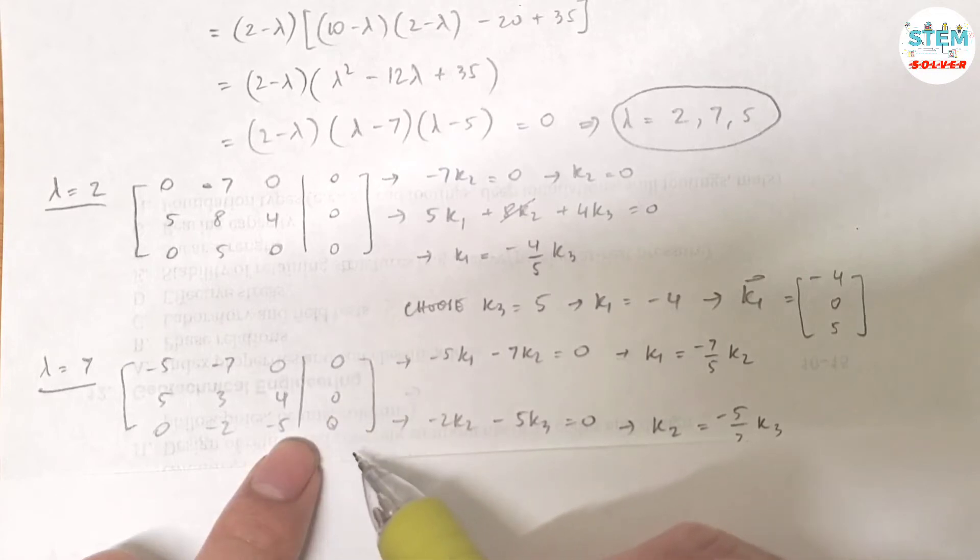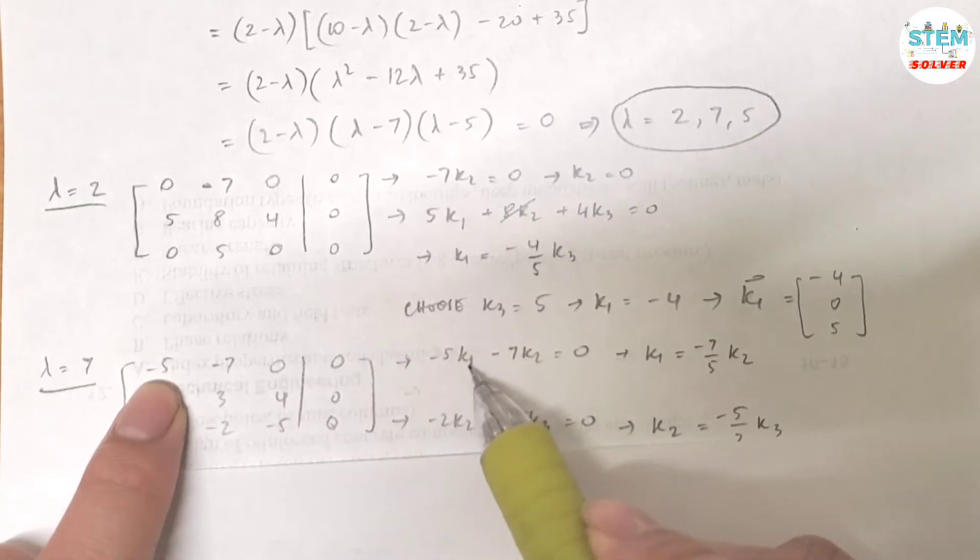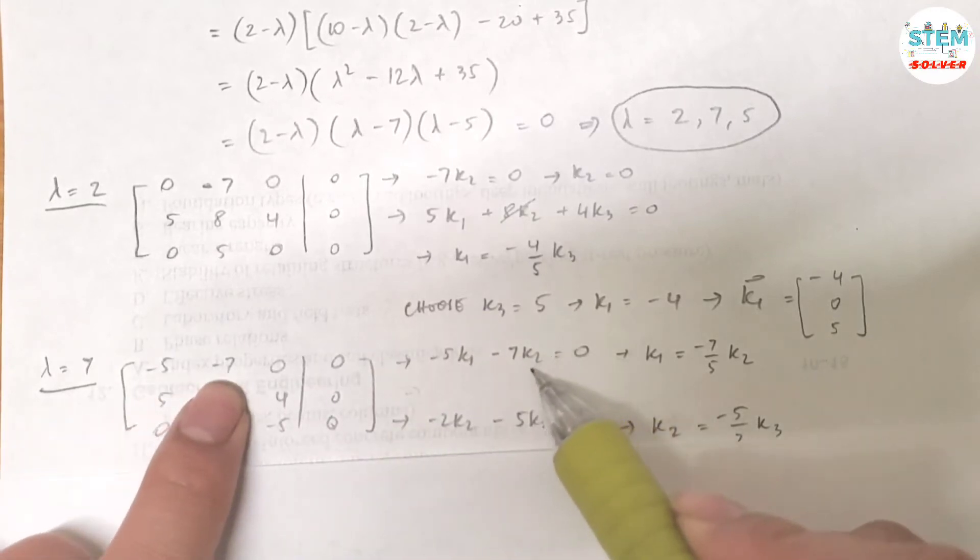I don't want to reduce this down to a base matrix because I know that it will give me infinite solution. So at this point I'm going to use the first equation. So I have negative 5k1 minus 7k2 equals 0. So solve for k1, I got negative 7 over 5k2.